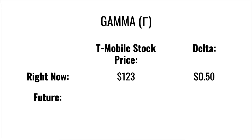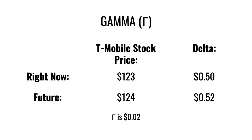Going back to delta: for every one dollar increase in stock price, the option's value increases by delta's value. So if T-Mobile's stock price is $123, delta is $0.50, and gamma is $0.02, then when T-Mobile's stock price increases from $123 to $124 — that $1 increase, all other factors constant — delta will increase by gamma's current value. So gamma is $0.02 and delta was $0.50, meaning delta moves to $0.52.